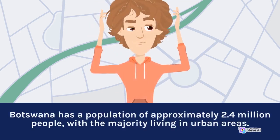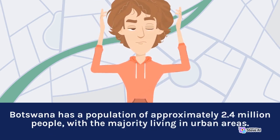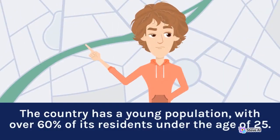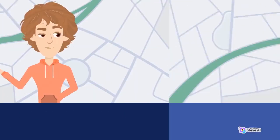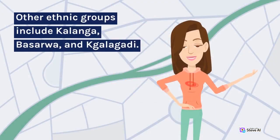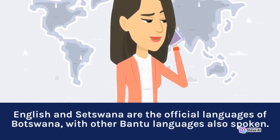Botswana has a population of approximately 2.4 million people, with the majority living in urban areas. The country has a young population, with over 60% of its residents under the age of 25. The Tswana ethnic group is the largest in the country, making up over 70% of the population. Other ethnic groups include Kalanga, Basarwa, and Kgalagadi. English and Setswana are the official languages of Botswana, with other Bantu languages also spoken.